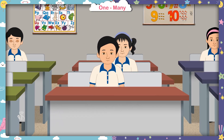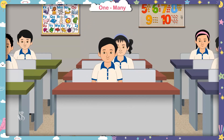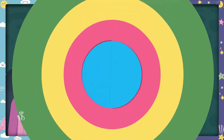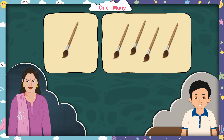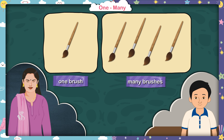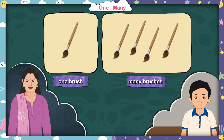Come on, children. Now I will show you some pictures. What do you see in this picture? Madam, there are brushes in this picture. Very good. Here we can see only one brush in the first picture and more than one, that is, many brushes in the second picture.